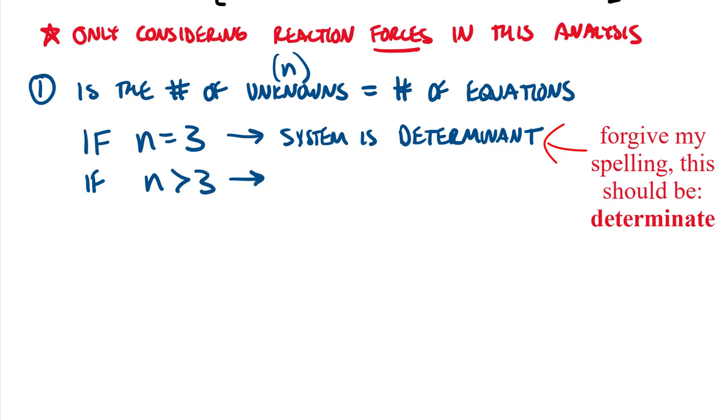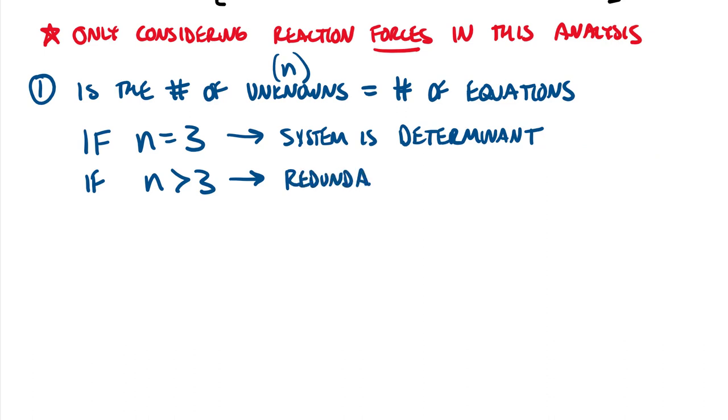If n is greater than three, we have what are called redundant reactions. And we'll say that these are not solvable in statics. So if you have redundant reactions, which honestly, in like a physical design sense, redundancy is good. If one reaction fails, why not have another reaction that's right there waiting to pick up the load? But because we're limited by our equations and statics, we couldn't solve for those here in this class.